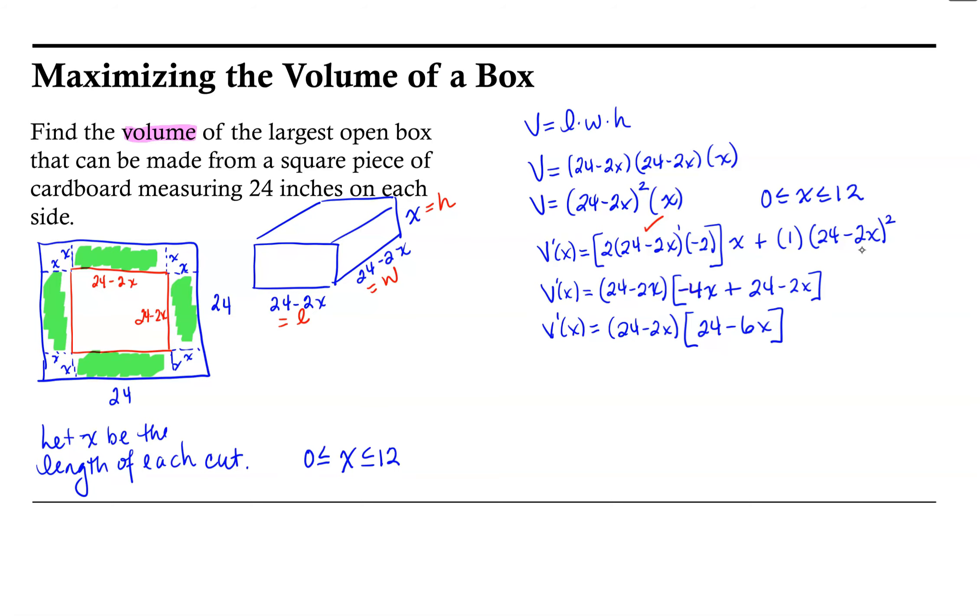So now we can start considering where this might equal 0 or be undefined in order to find our critical points. So the first source of critical points would be where my derivative is equal to 0. And the second source would be where my derivative does not exist. And for this second source we can see that we have a nice polynomial. There are no values of x for which the derivative does not exist. So turning back to the first source, we could have a critical point where 24 minus 2x equals 0, or where 24 minus 6x equals 0.